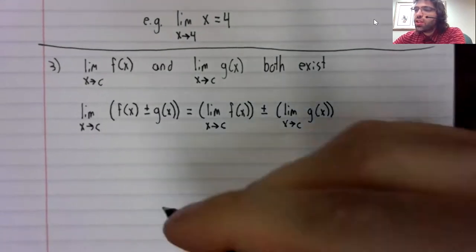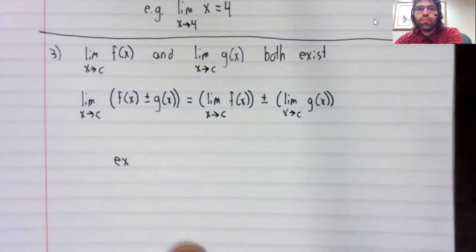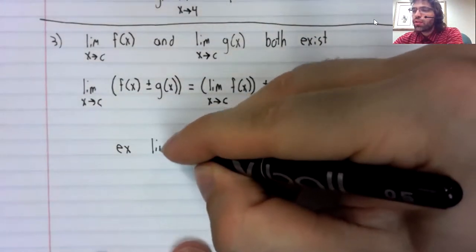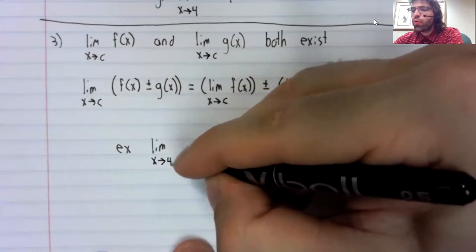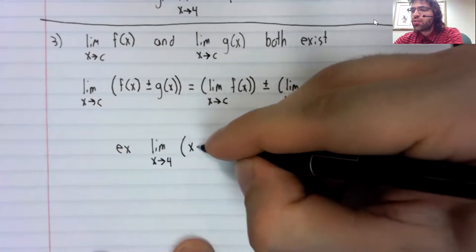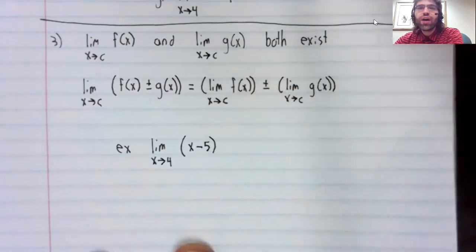Let's see how we can use this rule. In an example, the limit as x approaches four of x minus five.